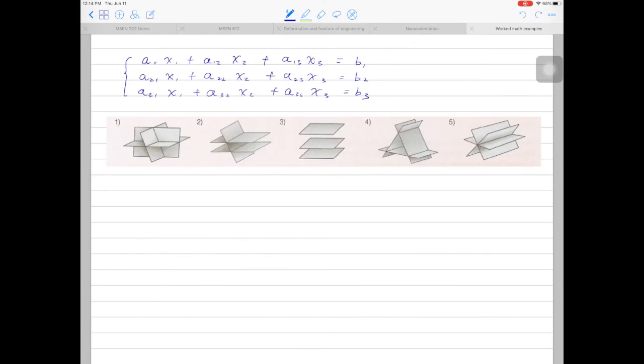Here are five possible ways for those planes to intersect. In the first case, all three planes intersect at a single point, so we have the unique solution. For cases 2, 3, and 4, there's no unique intersection among those three planes, so no solution.